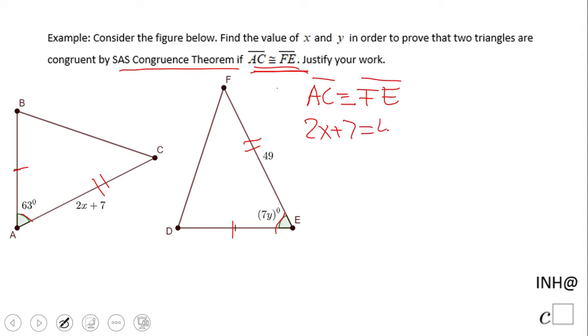We just need to find x. 2x equals 49 minus 7, which is 42, and x equals 21. Pretty easy, right?